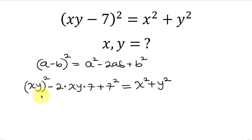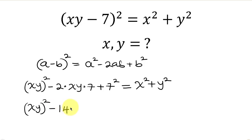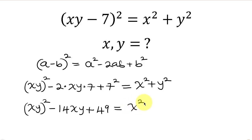Simplifying the left-hand side, we have (xy)² - 2 × xy × 7, that is 14xy, and then plus 7² is 49, and this is equal to x² + y².